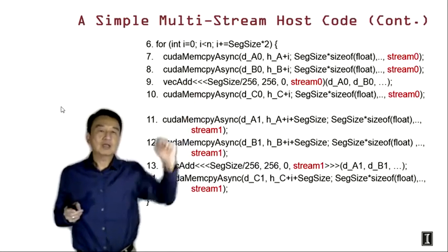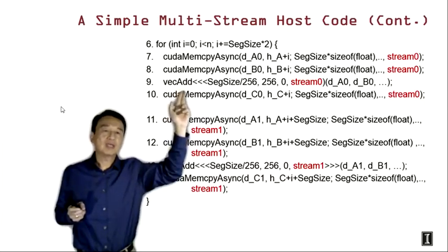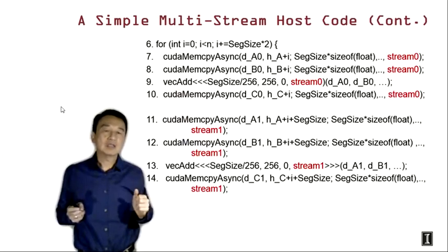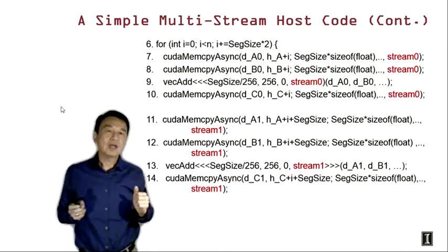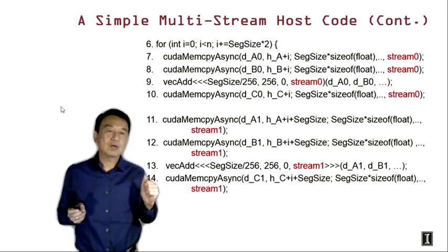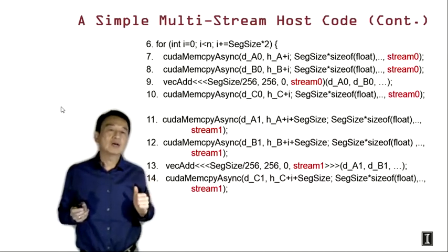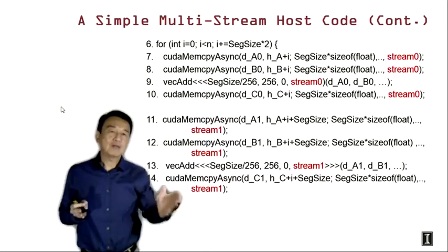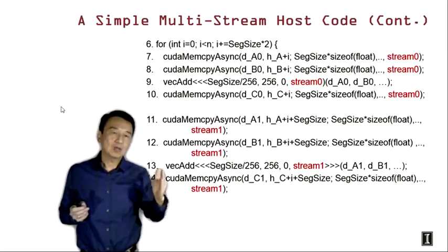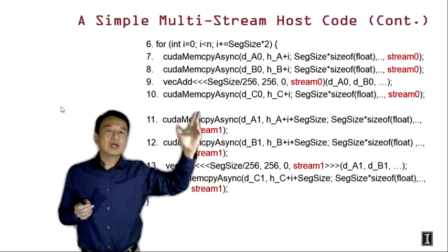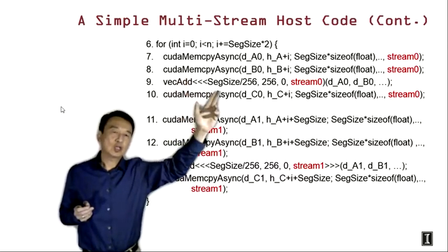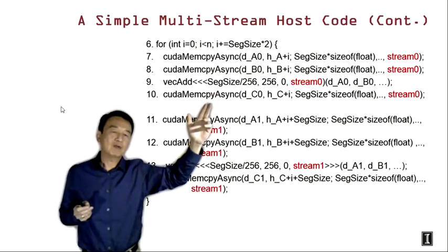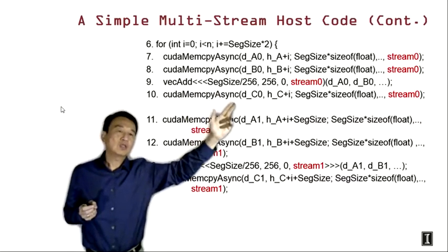Here we show the data copy from host to device using cudaMemcpyAsync. This is the asynchronous data transfer we talked about earlier. We also need to make sure that when we allocate HA and HB, we allocate them in pinned host memory. We then use the index I to advance the pointer to the particular segment that we're sending to the GPU.